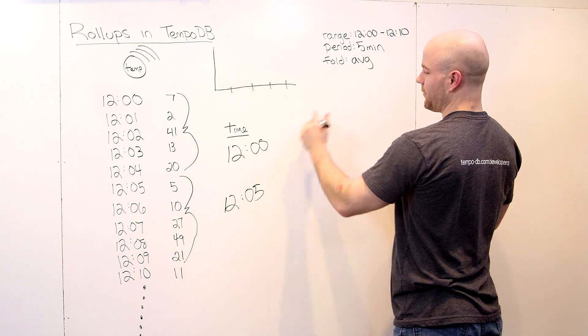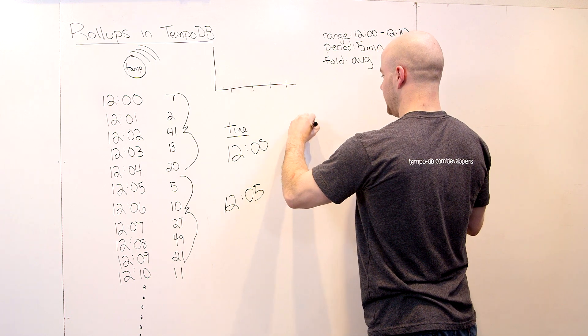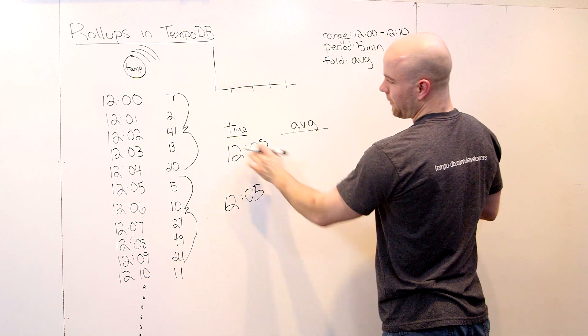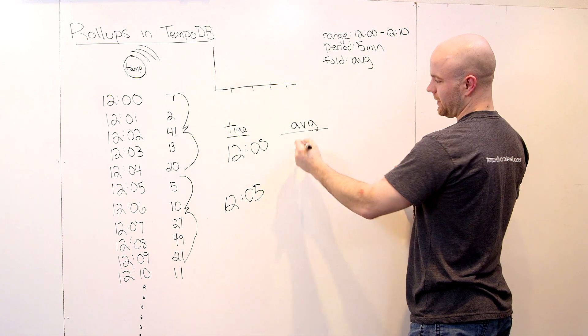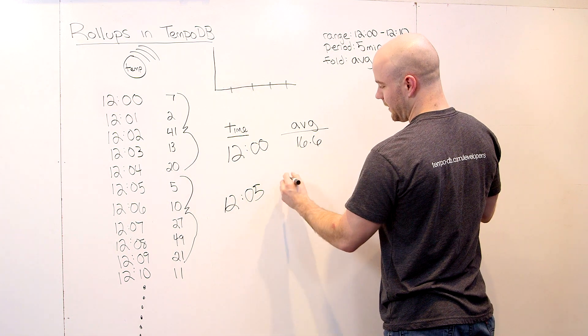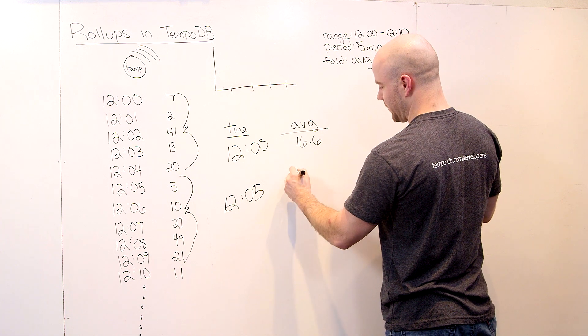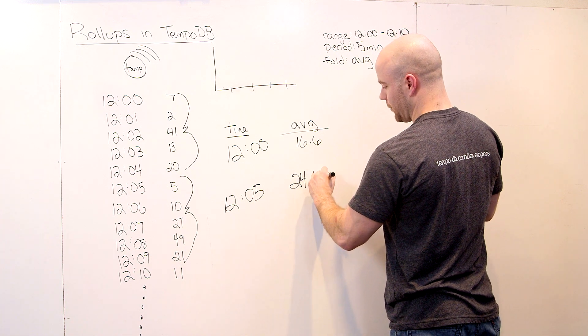And the difference between these start points matches the period that you asked for in the original call. So we're going to do folds or we're going to do averages. So the average of this first five-minute bucket is 16.6.